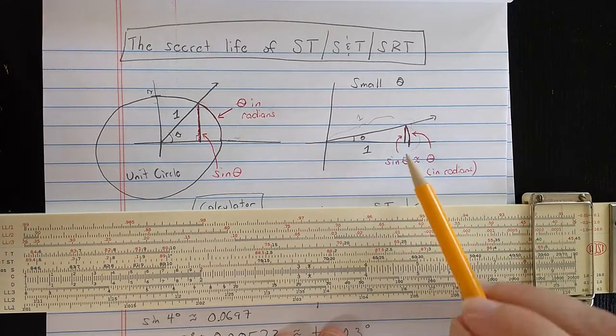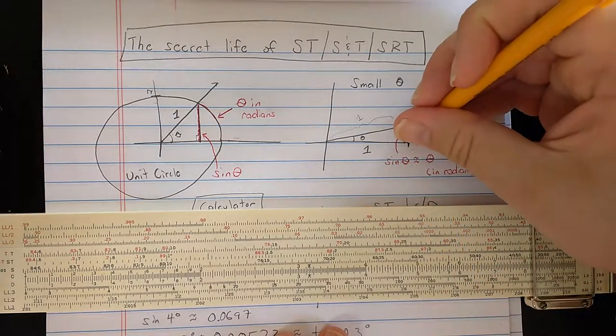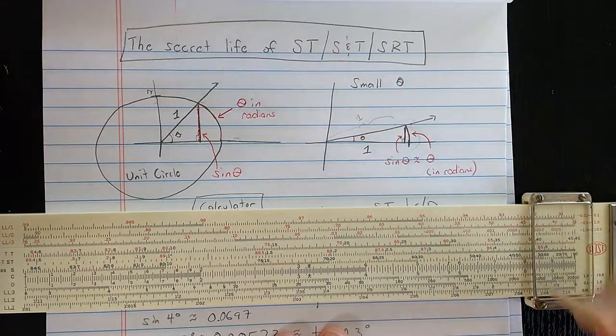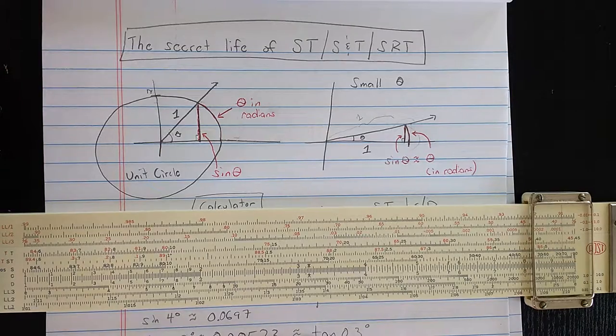At the beginning, for small angles, the sine, this length makes a right angle here, and this arc are about the same length. That's the trick.